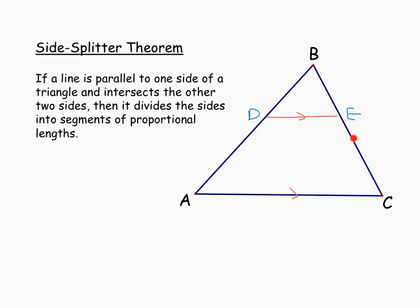Segments BA and BC are split proportionally. So we could say the top part BD to the bottom part DA matches the top part on the other side, BE, to EC. That's what the side-splitter theorem says: the ratio of BD to DA is proportional to BE to EC. We'll use that to find missing parts in a diagram like this.